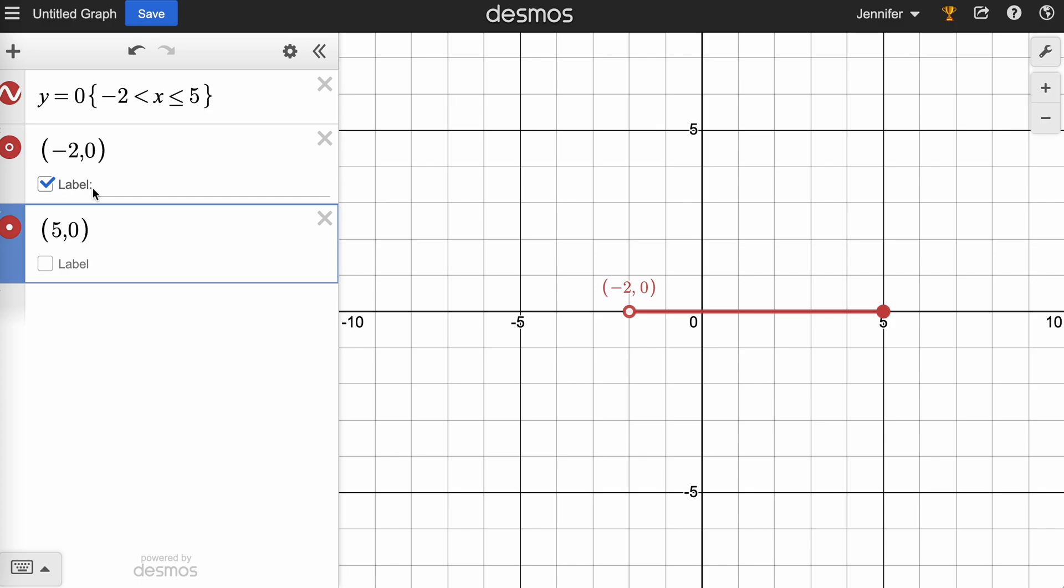If you want to put the labels on those dots, you need to select the label. And I don't really want the entire ordered pair. I just want the negative 2. So I'm going to relabel that to be from negative 2 to 5.